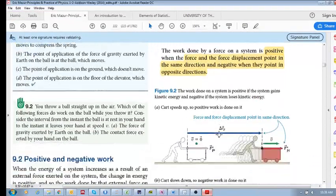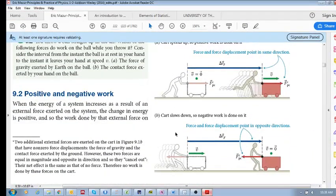So let's do this one final example. Here the person is, there's the point of application, the person's applying a force there. That's the direction of the displacement, the force displacement, and that's the direction of the force. They're in the same direction, so the work done is positive.